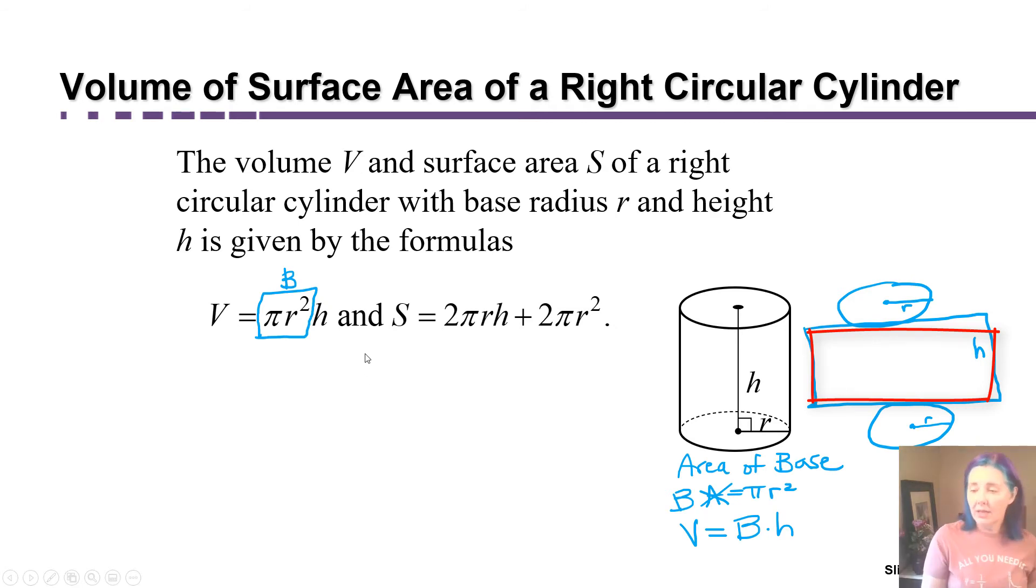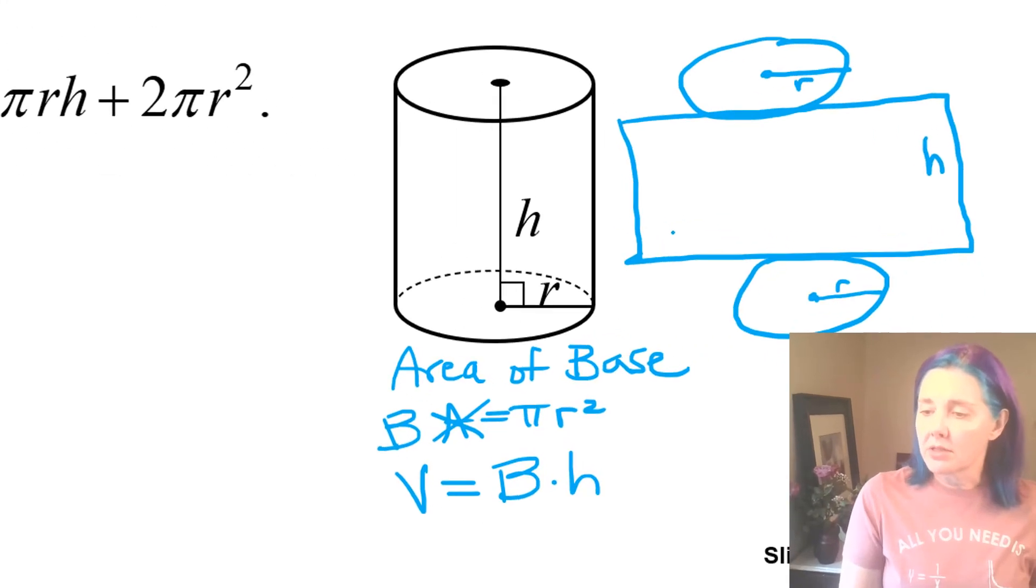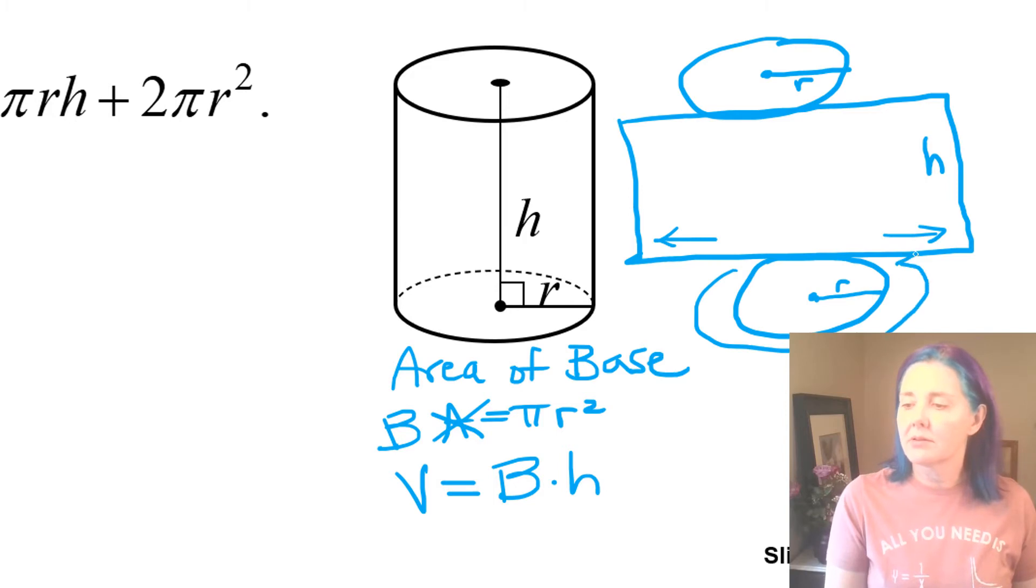One dimension of that rectangle is h. The other dimension, which we will need if we're going to get the surface area, notice that that's exactly the distance around the circle, which we call the circumference of a circle. And you probably remember that the circumference is 2 pi times the radius. So the area of the sides of the can, if you imagine a soda can being flattened out, the area here is going to be 2 pi r times h.